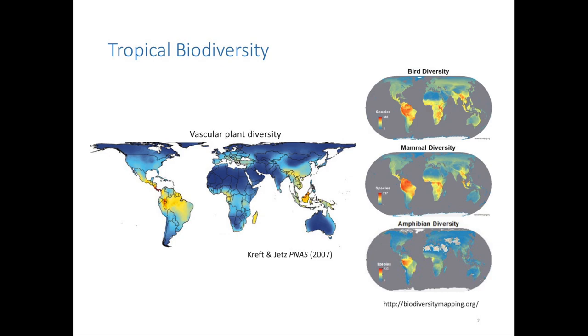Tropical forests are exceptional in a number of ways. If you look at tropical biodiversity, you can see from the areas that stand out in the reds and yellows that these are areas where you have the highest concentrations of species. Whether you look at plants or birds or mammals or most any other taxa, the real hotspots for biodiversity are in the major tropical forest regions like Central and Southern Americas, Central Africa, and the Indo-Malayan region. Although tropical forests cover just 12% of land area, they hold more than half of all terrestrial biodiversity.